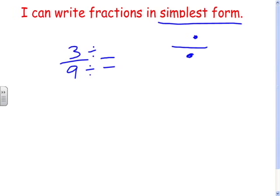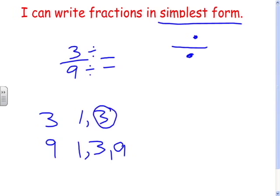So what number can we divide both 3 and 9 by? One way to figure this out is to look for common factors. If we can find the greatest common factor, it will only take one step. The factors of 3 are just 1 and 3. The factors of 9 are 1, 3, and 9. The greatest common factor is 3.